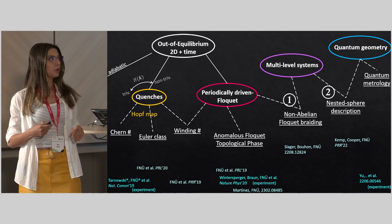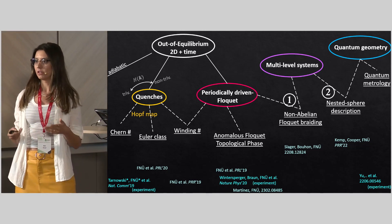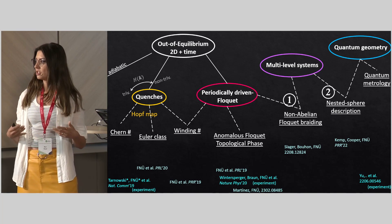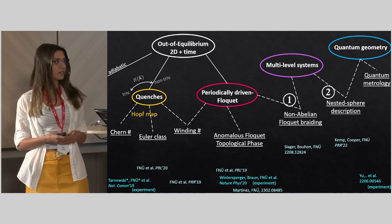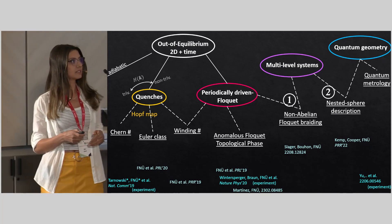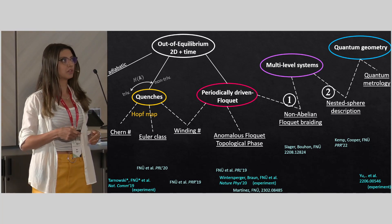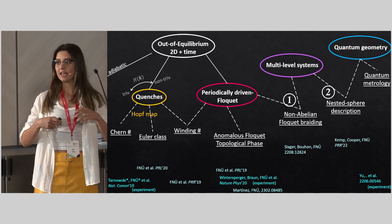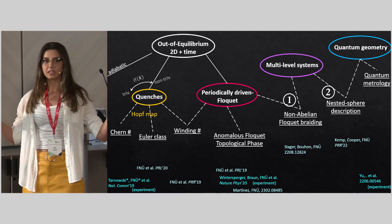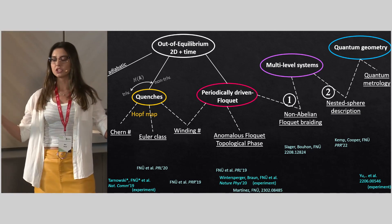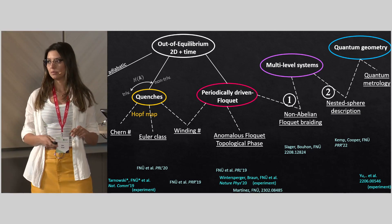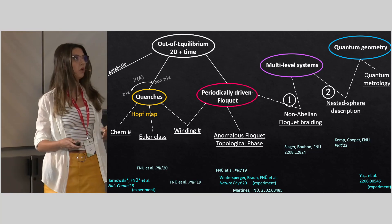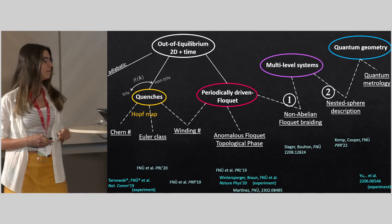Today I want to talk about new kinds of topologies that have been emerging in multi-level systems. After giving a quick overview of Floquet and anomalous topology that arises in Floquet systems, I want to talk about the Non-Abelian Euler class and give a broader geometric perspective that reaches beyond the Euler class.